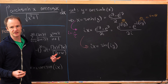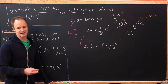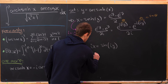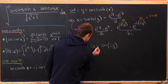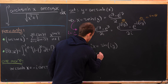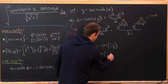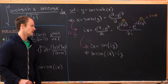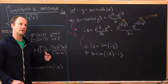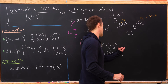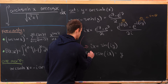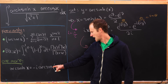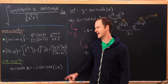From here we take the inverse sine of both sides, giving us arcsin(ix) equals i·y. Then we divide by i — which is the same as multiplying by negative i — to get y equals negative i times arcsin(ix), which is exactly the identity we needed.